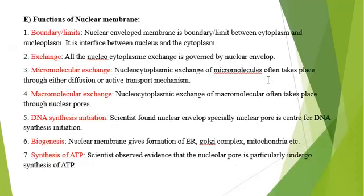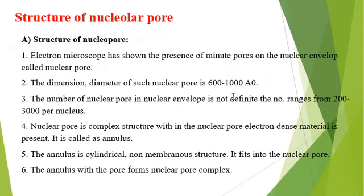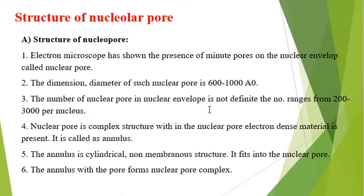The electron microscope has shown the presence of minute pores on the nuclear envelope called the nuclear pore. The outer membrane and inner membrane are not continuous — they are interrupted, and at the interrupted part the nuclear pore is present. The diameter of the nuclear pore is about 600 to 1000 angstrom.